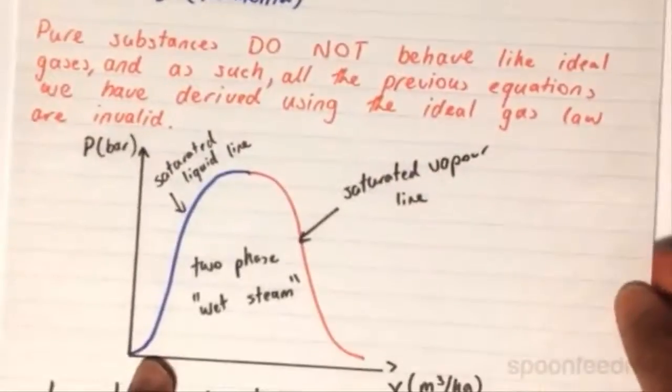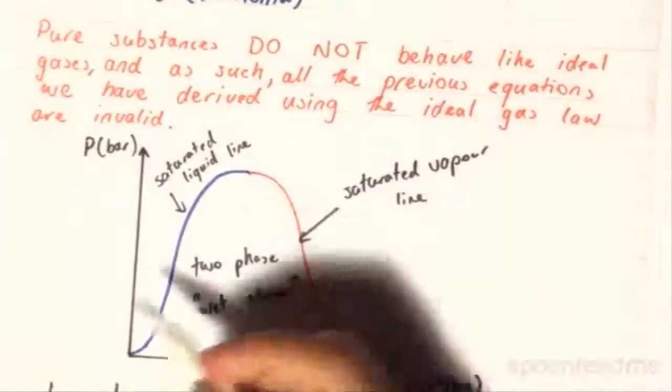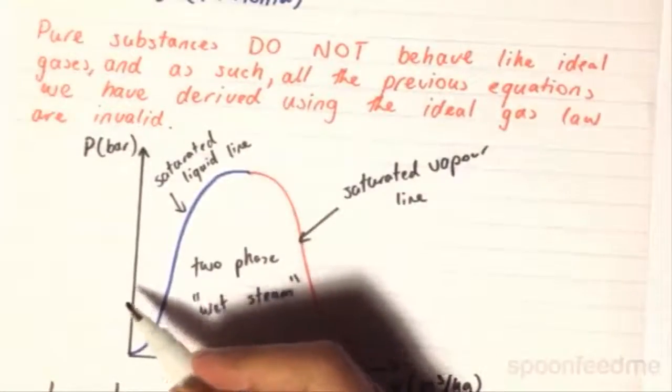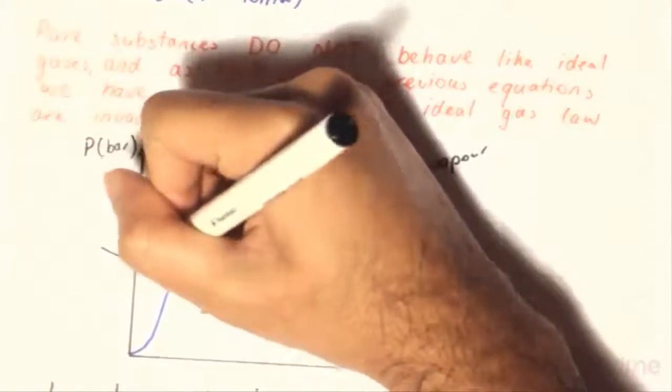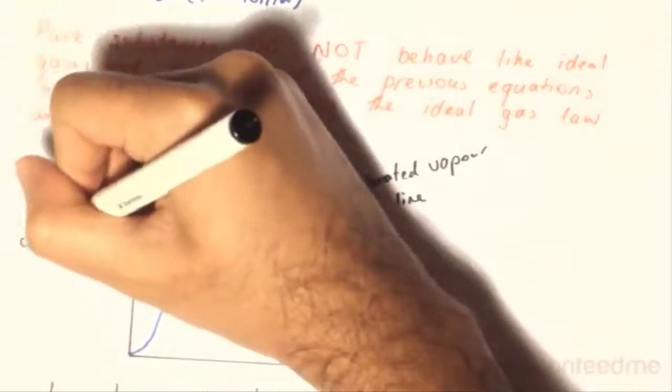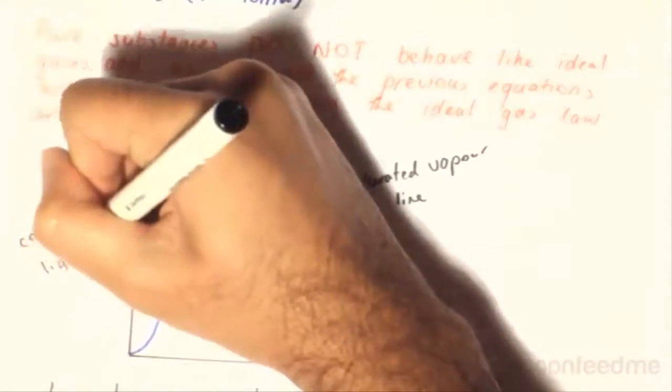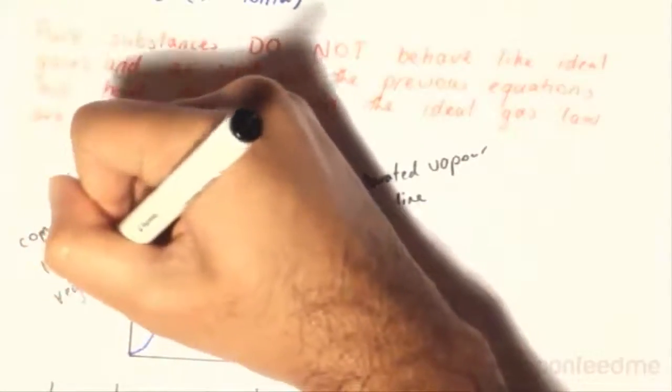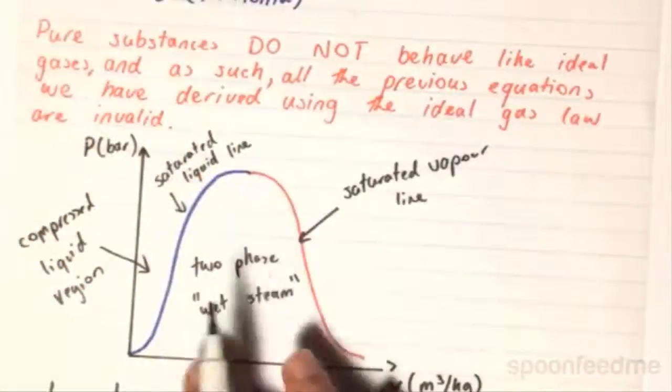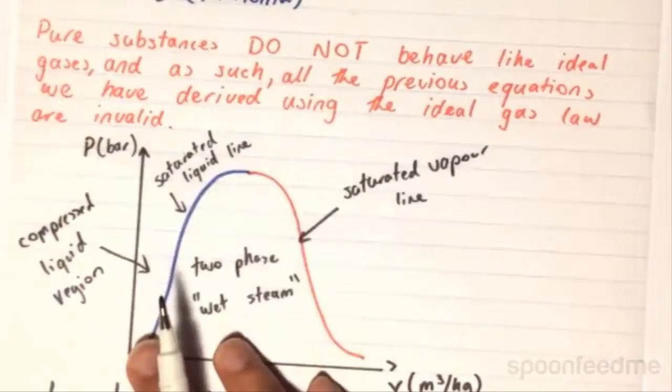Now, if we go back to our PV diagram over here, if we go to the left of the saturated liquid line, we go to a state where it's called the compressed liquid region. This region is basically 100% liquid. And therefore,